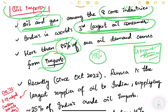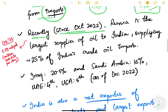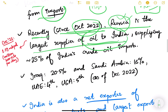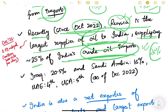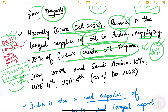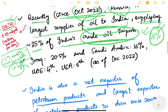As of October 2022, Russia is the largest supplier of oil to India, supplying almost 25 percent of India's crude oil imports. In December 2022, India was buying 1.19 million barrels per day from Russia — one million equals ten lakh — so 1.19 million barrels per day, accounting for almost 25 percent of our crude oil imports.